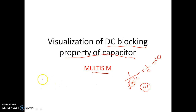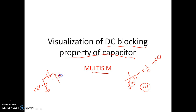Basically what will happen — suppose you are applying one DC signal, let's say 12 volts. And you keep one capacitor. What will happen: the capacitor will block the DC. Now if you take the output across the resistor R, across R you will get voltage as 0 volts, because the capacitor is blocking the DC. This is the DC blocking property of the capacitor.